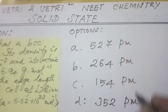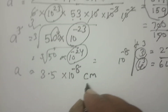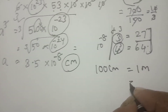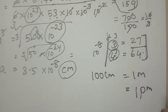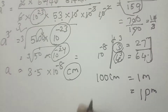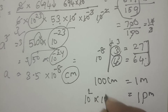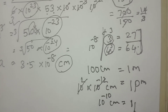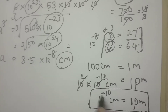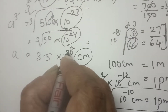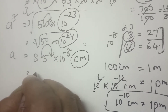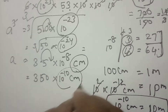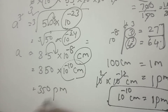The answer options are in picometer. To convert: 100 centimeter = 1 meter, and 1 picometer = 10⁻¹² meter, so 10⁻¹⁰ centimeter equals 1 picometer. Our value is 3.5×10⁻⁸ centimeter. Moving two decimal places: 350×10⁻¹⁰ centimeter, which equals 350 picometer. So the answer is 350 picometer.